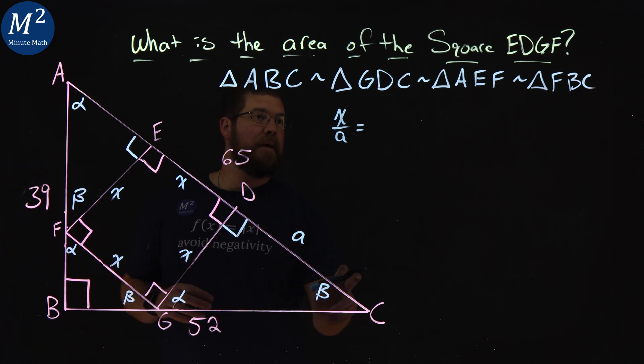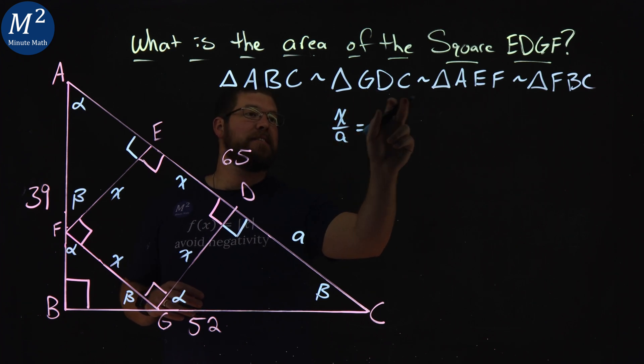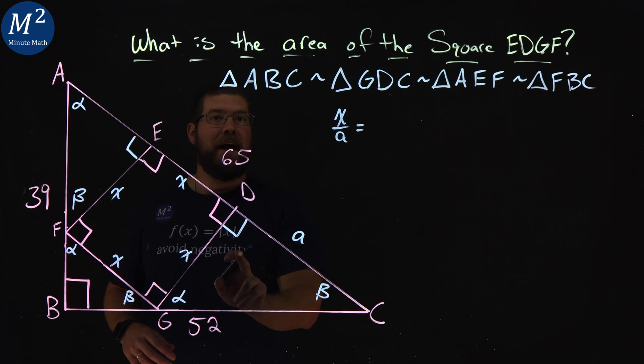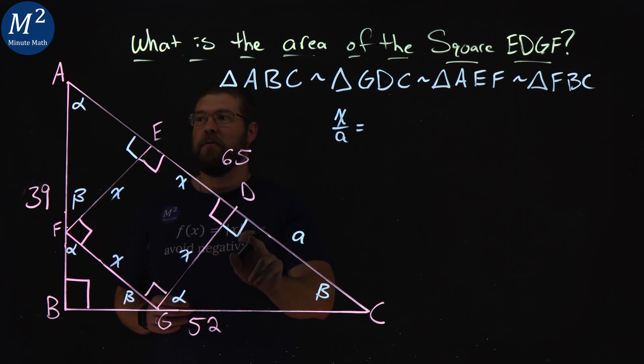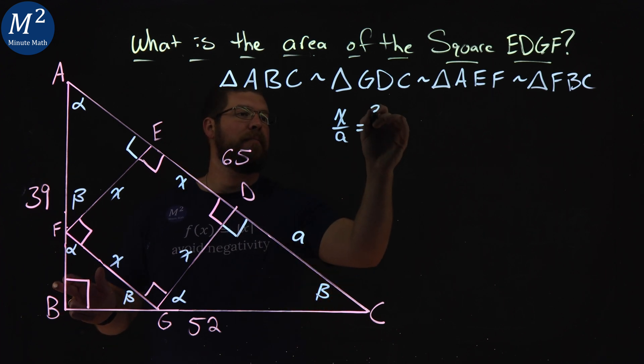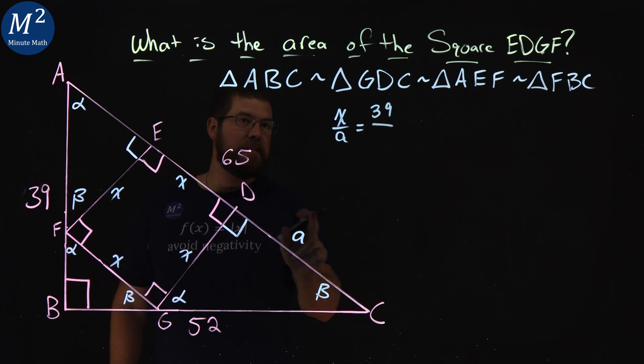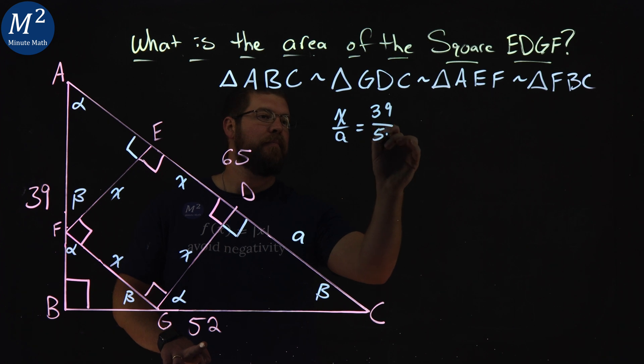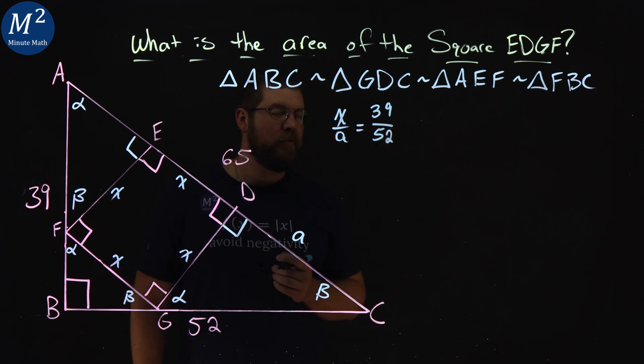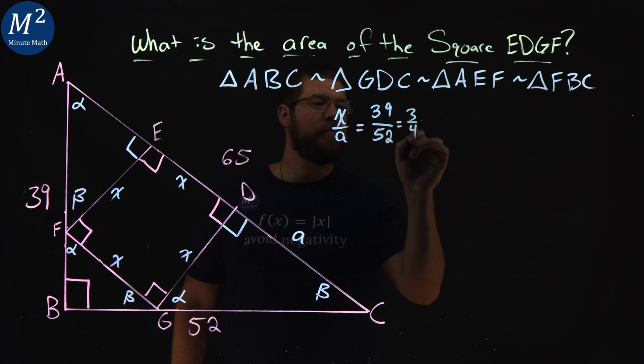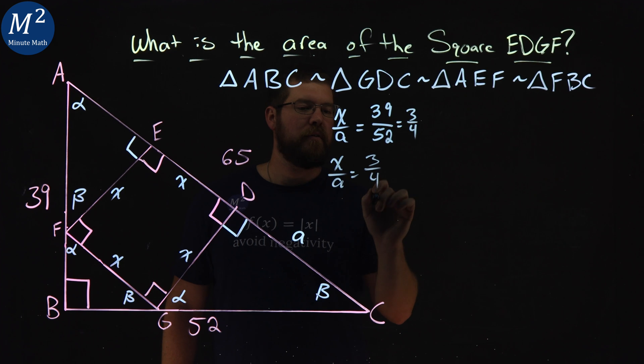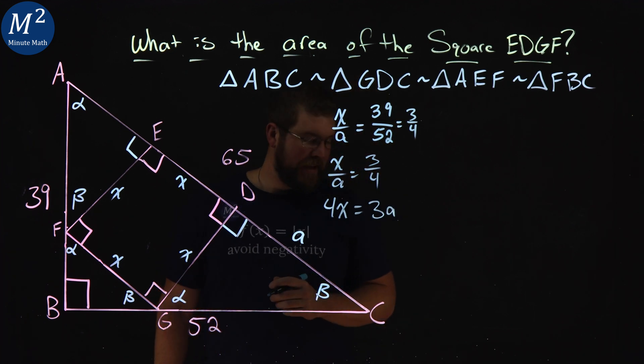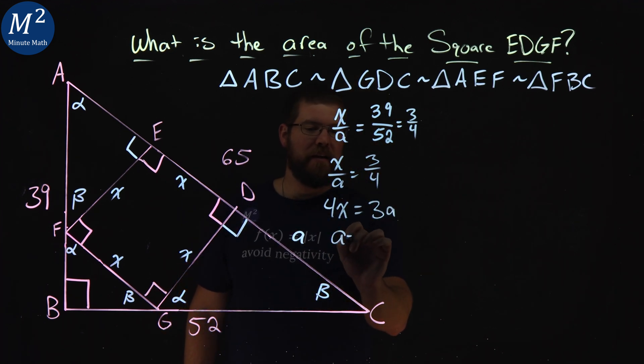So X over A is going to be equal to, let's go proportion of values that we know from the large triangle. We have triangle GDC right here with ABC. So GD is length of X. That's going to line up, that's from alpha to the right angle. Alpha to the right angle is 39 over D to C, which we said was A, which is the other leg. So that's going to be right angle to beta, 52. Now luckily for us, 39 over 52 simplifies to be 3 fourths. So we have X over A equals 3 fourths. Cross multiply, 4X equals 3A. And I want to get A by itself, that length in terms of X. So A is equal to 4 thirds X.